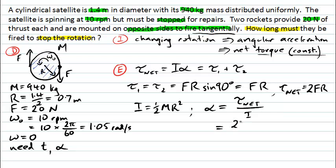that will be 2FR divided by ½MR². And we can simplify a few things there. We will end up with 4 times the force divided by the mass times the radius.